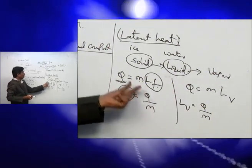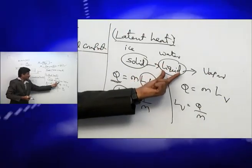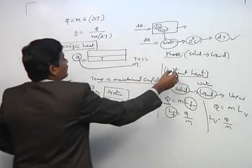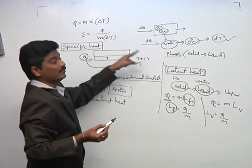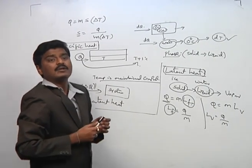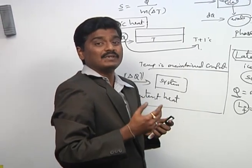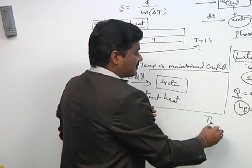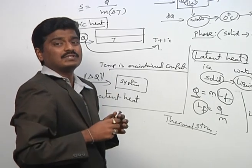Latent heat of fusion is the amount of heat required per unit mass of ice to convert it to liquid. Latent heat of vaporization is the amount of heat required per unit mass of water to convert it to vapor. Once the phase changes completely, further heat supplied brings specific heat back into the picture. We have discussed specific heat, latent heat, thermal expansion of materials and liquids, and thermal stress derivations.